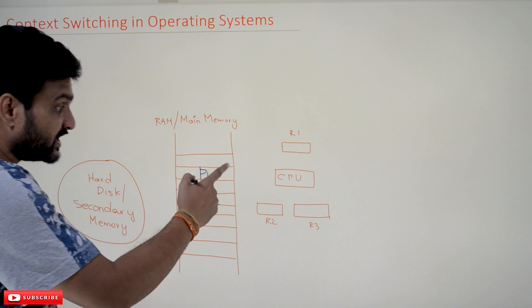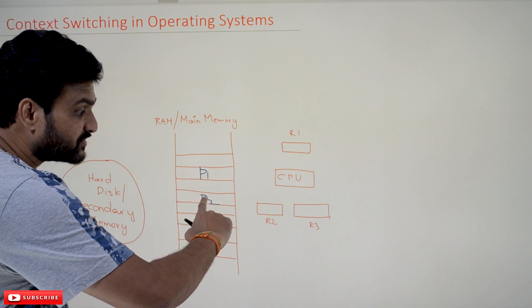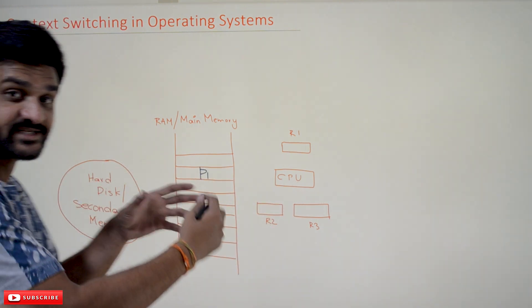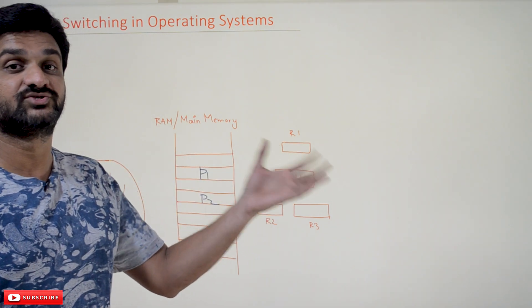So whenever an interrupt occurs, a process will get shifted. The process will get switched from running to ready state. So whenever that is getting switched, a new process will be switched from ready state to running state.